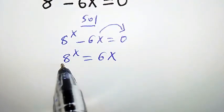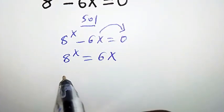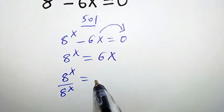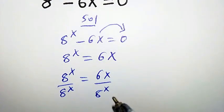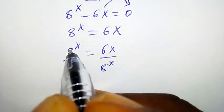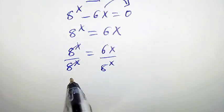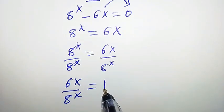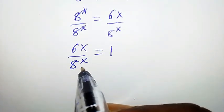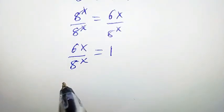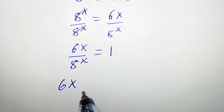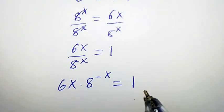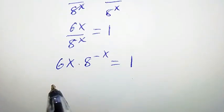Now let's divide both sides by 8 to the power of x, so we get 8^x over 8^x equal to 6x over 8^x. Clearly these cancel each other, leaving us with 6x over 8^x equal to 1. Bringing 8^x to the numerator gives us 6x times 8 to the power of negative x equal to 1.